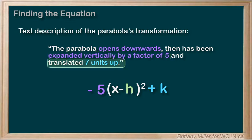Translated 7 units up means that k is positive 7. It doesn't say anything about h, so we can assume that h is 0.